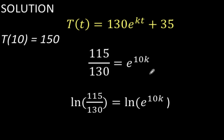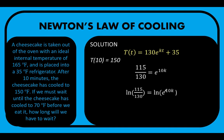Then let's take the natural logarithms of both sides to get ln of the left side equals ln of the right side. Applying the power rule of logarithms, you can now place this exponent 10k as the coefficient of ln of e.